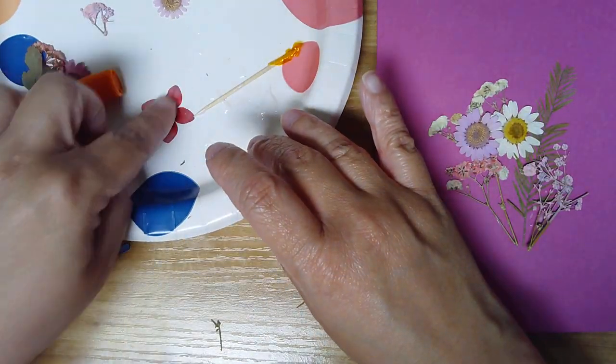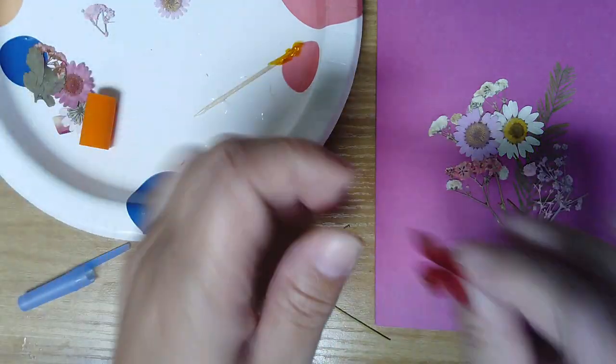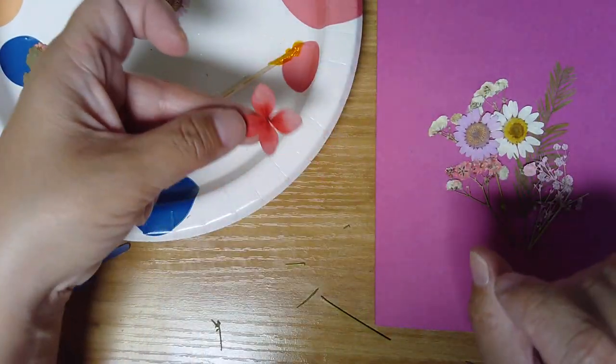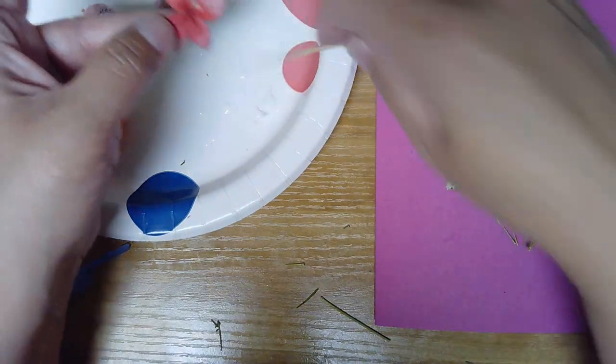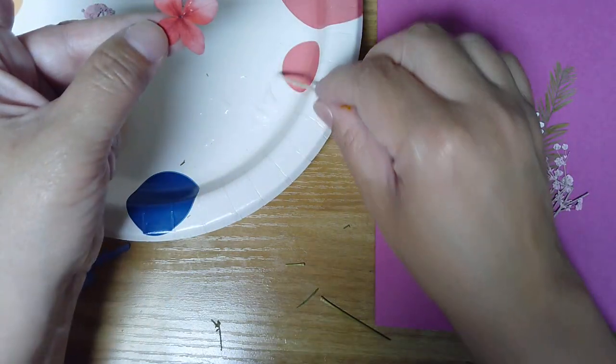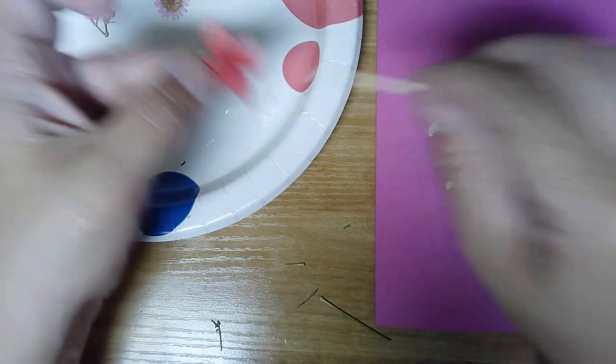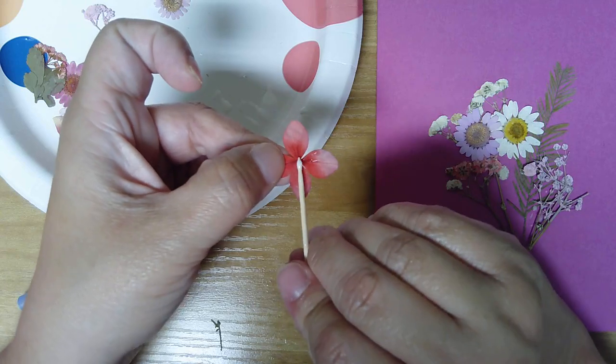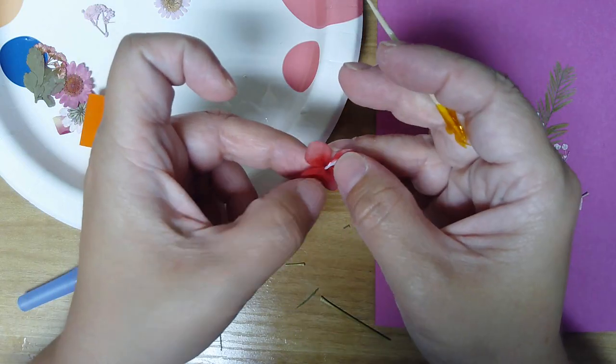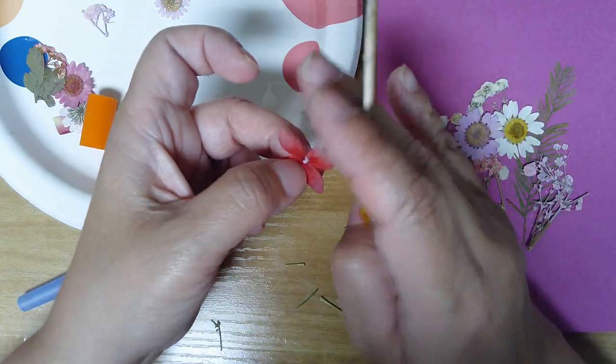Alright, so I'm going to use this one just so you can see what to do with these. So this is a really thin flower and I'm only going to put glue right in the middle and a very tiny amount and try not to get it on the petals, which I just did. I'm going to take some of it off.